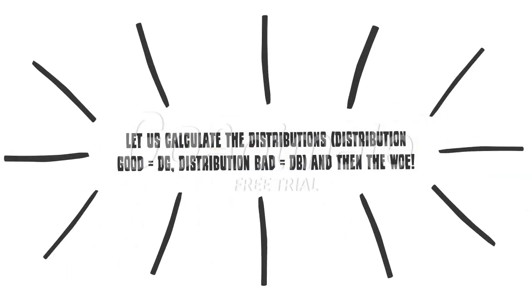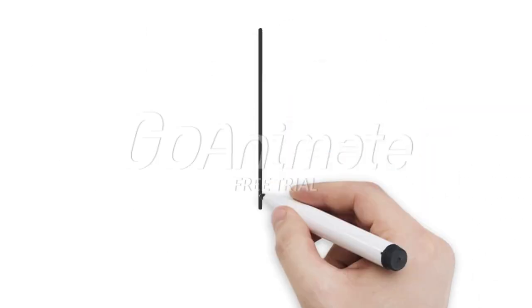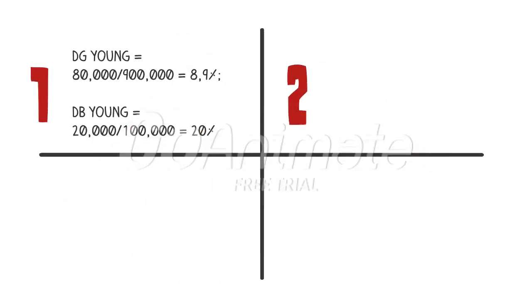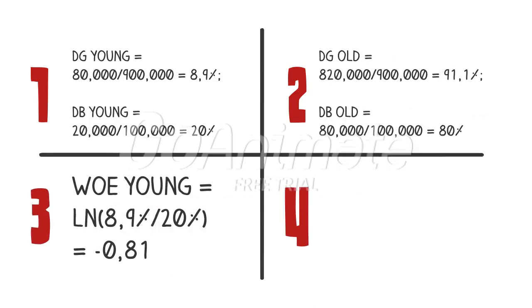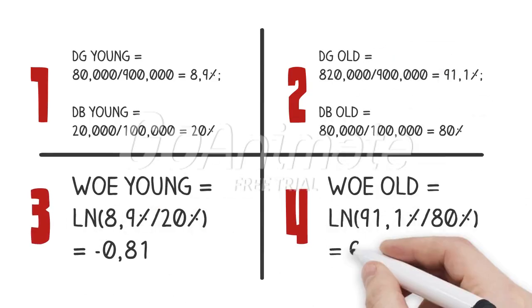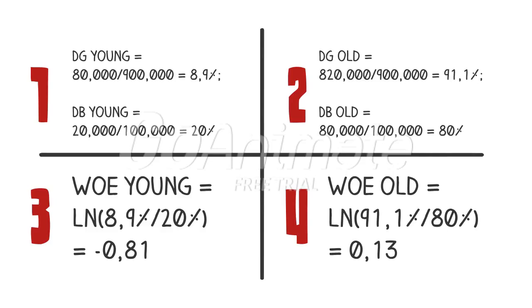Now let us calculate the distributions of good credits and bad credits, and then we can calculate the weight of evidence. The distribution of credit for one specific class is very easy to calculate. For example, if you want to calculate good credits of young people, you just take all 80,000 good credits and divide by the total amount of good credits for all loans.